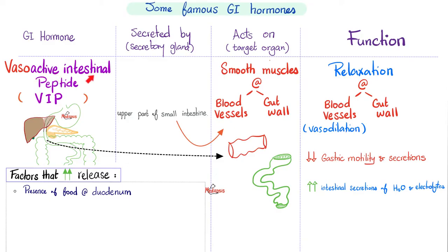Now let's talk about VIP — vasoactive intestinal peptide. It's released from the upper part of the small intestine. It relaxes smooth muscles in blood vessels, causing vasodilation, and in the stomach it inhibits motility and secretion. But when it comes to the intestine, it boosts secretions full of water and electrolytes. That's why if you have a tumor secreting too much VIP, you'll secrete too much water and electrolytes from the intestine and develop secretory diarrhea.